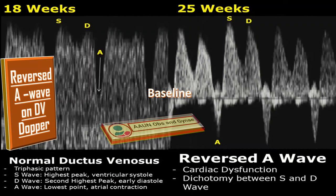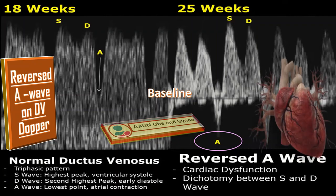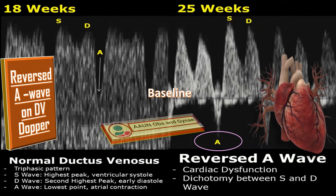Next comes the reversed A wave. The reversed A wave means the A wave is below the normal baseline on the ductus venosus Doppler ultrasound — it is definitely abnormal. Here you can see the baseline, and here you can see the reversed A wave in the same fetus taken at 25 weeks of gestation. The reversed A wave indicates cardiac dysfunction. You can also see the dichotomy between the S and D waves, which are almost at the same levels and closer to each other, further indicating cardiac dysfunction.